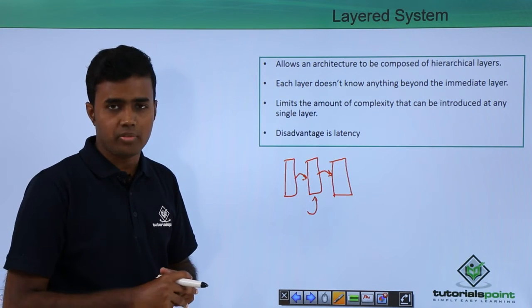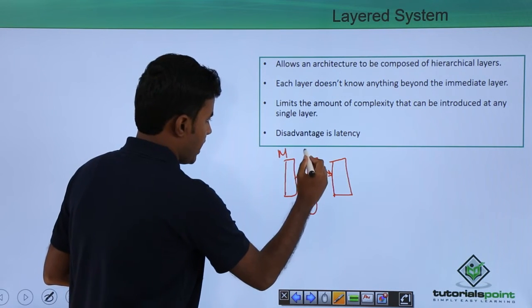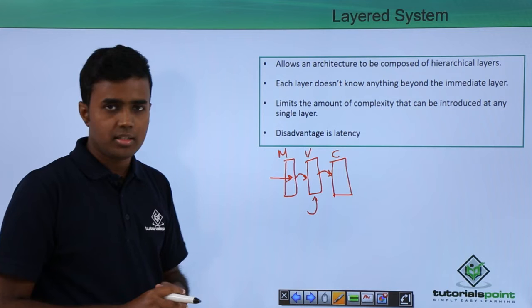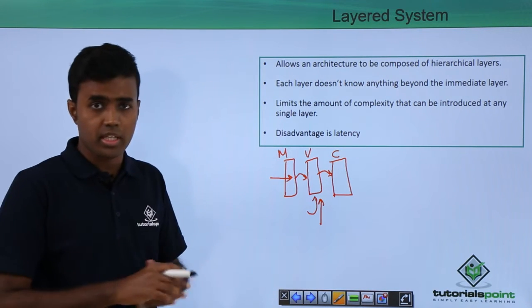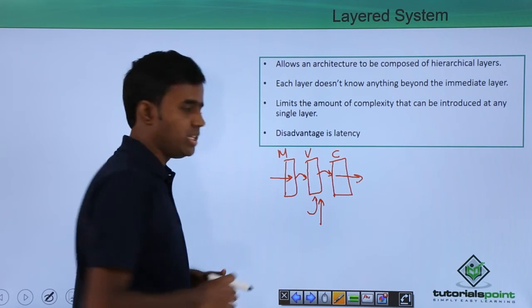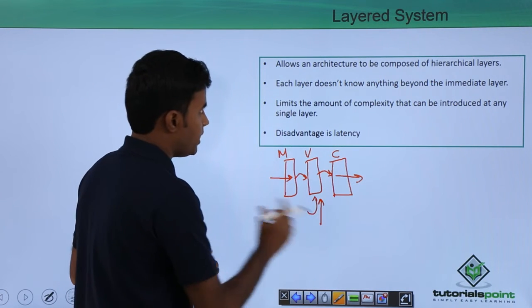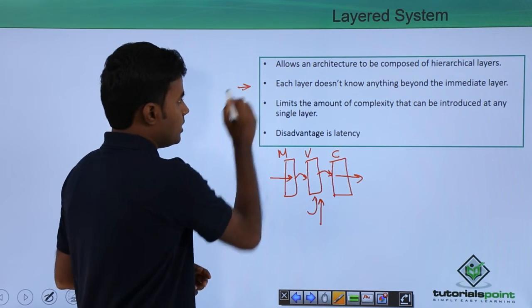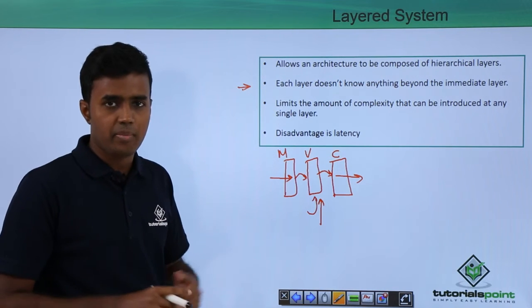A fine example of this is the MVC framework. In MVC, you have Model, View, and Controller — where the Model deals with your data and the database, the View deals with how the output is presented to the client, and the Controller deals with the incoming user request. Each layer does not know anything about the other layers other than the one immediately next to it.